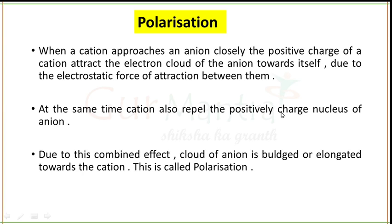Generally, a cation with smaller size or with high positive charge causes high polarization of the anion. Due to the combined effect of attraction — between the electron cloud of the anion and the cation — and repulsion — between the positive charge of the cation and the nucleus of the anion — the electron cloud of the anion is bulged or elongated towards the cation. This combined effect of attraction and repulsion is known as polarization.